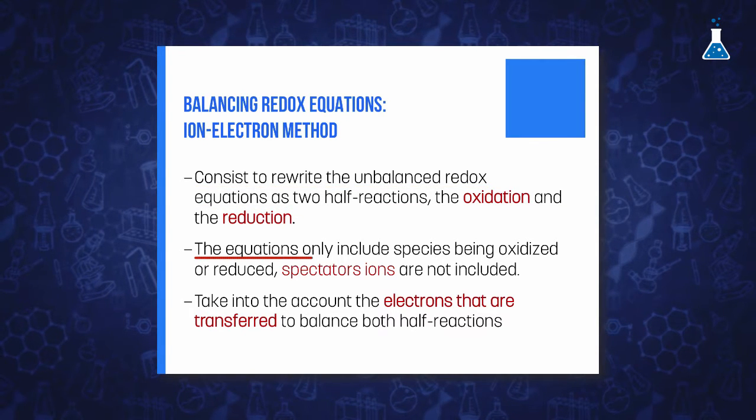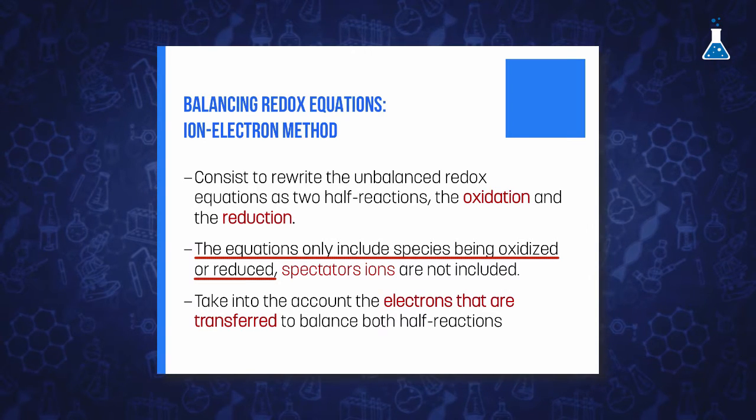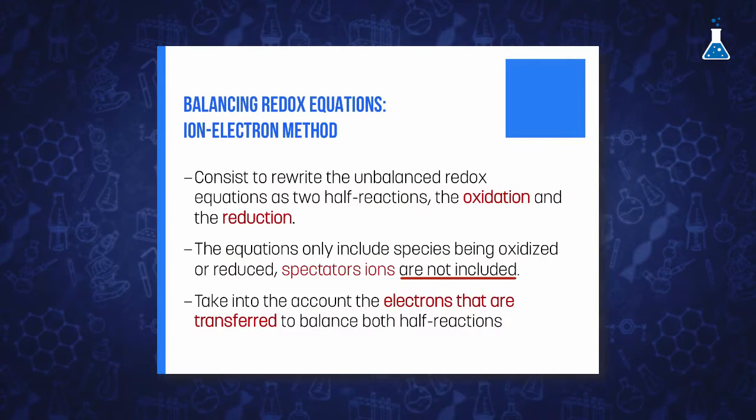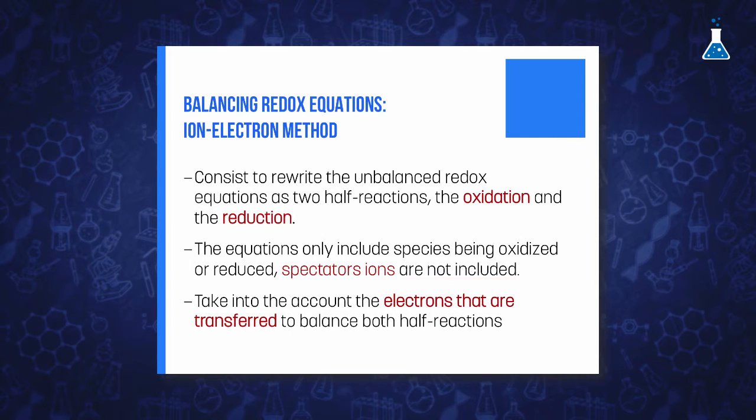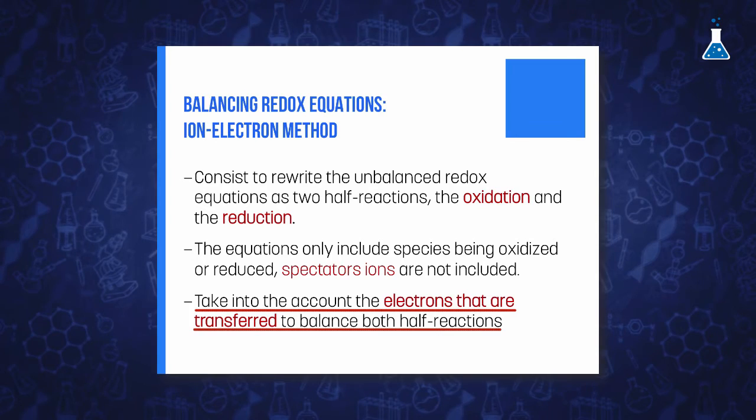This equation shows only the species being oxidized and reduced, while the so-called spectator ions, which are present but play no role in the chemistry of the reaction, are not included. The method takes into account the electrons that are transferred to balance both half-reactions.